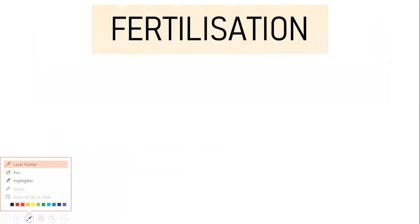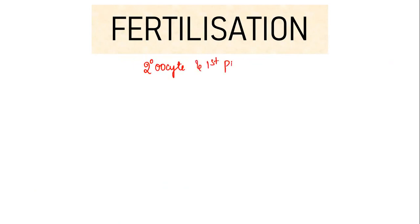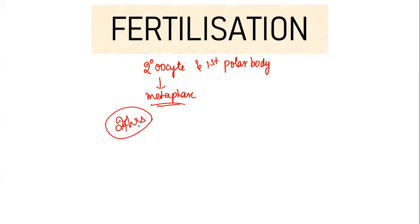From the last video: the first meiotic division is complete, resulting in the formation of the secondary oocyte and first polar body. This secondary oocyte enters the second meiotic division and gets arrested at metaphase, where it will wait for 24 hours. Within that 24-hour window, if sperm fuses with the secondary oocyte, meiosis 2 is completed and a zygote is formed.